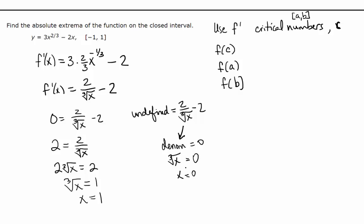So we're going to check f of 0, f of 1, and then the other end point, f of negative 1. So what, plugging back into the original function, 3 times 0 to the 2/3 minus 2 times 0 is 0.